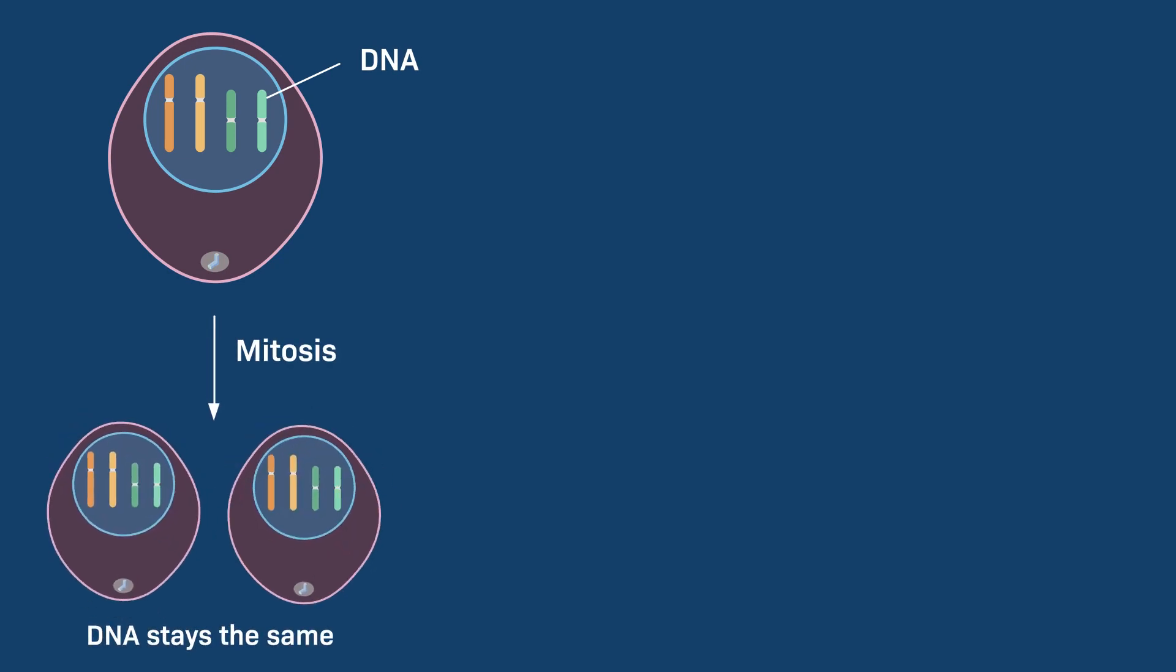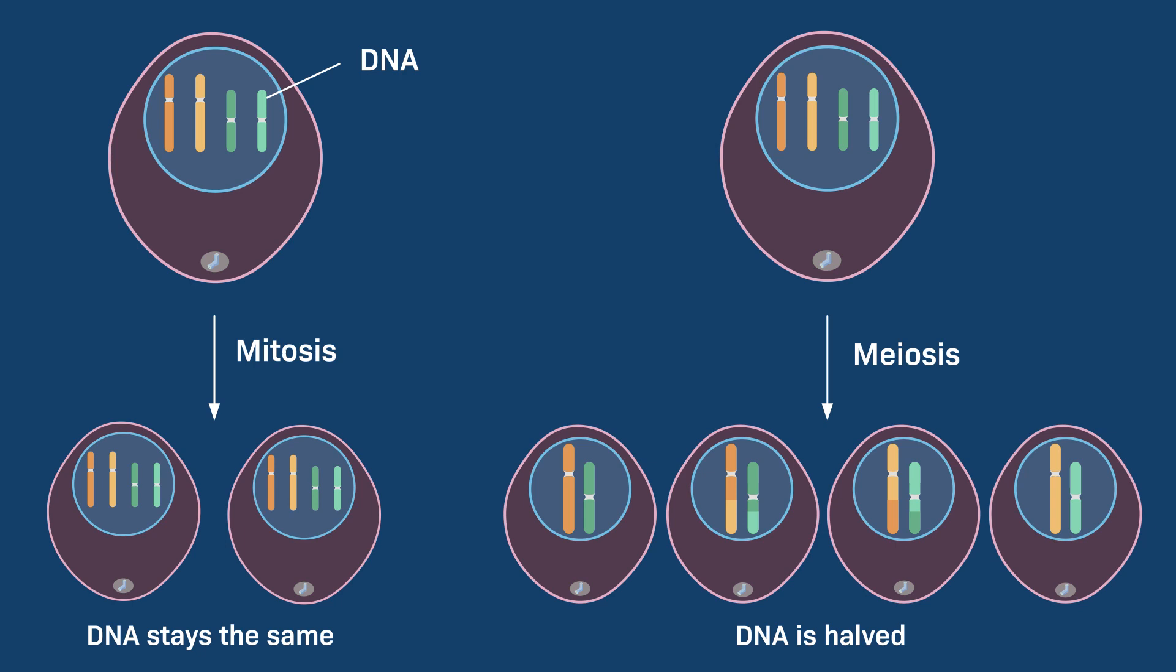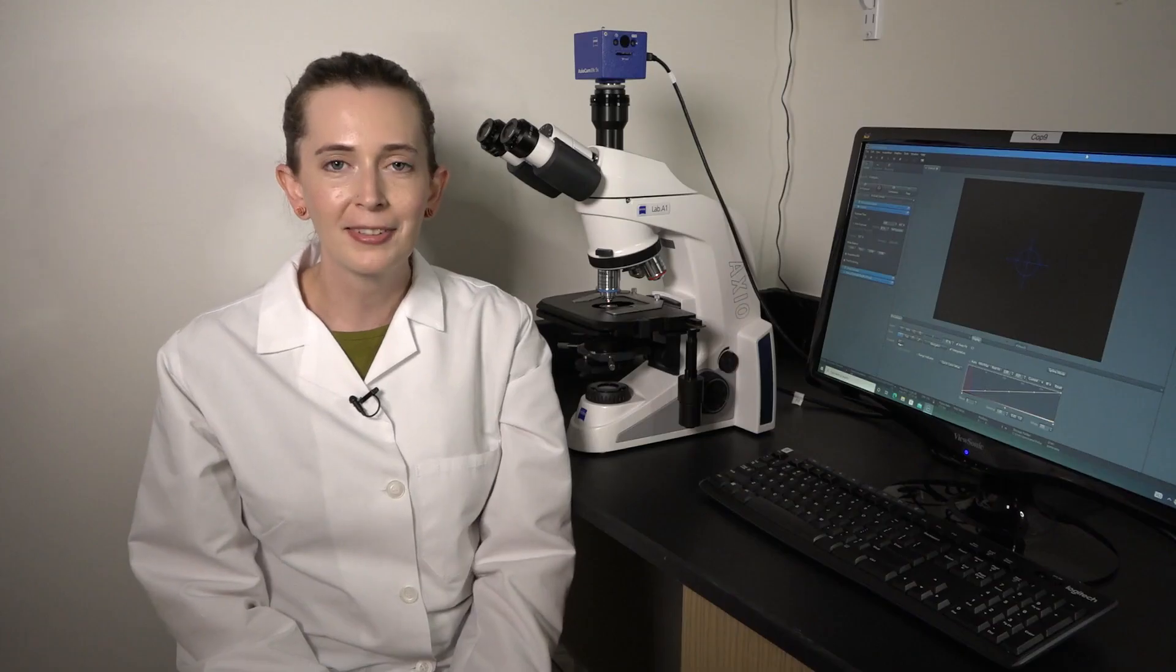Meiosis happens in our ovaries and testes to make gametes - eggs and sperm. When a cell undergoes mitosis, the resulting cells wind up with the same amount of DNA as the original cell. In meiosis, on the other hand, the resulting cells wind up with half the amount of DNA as the original cell before the division.